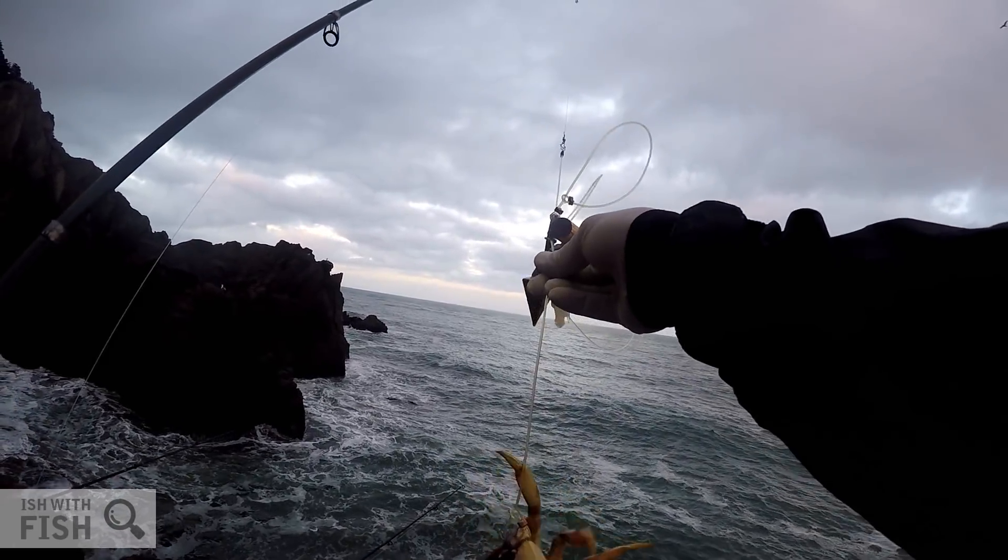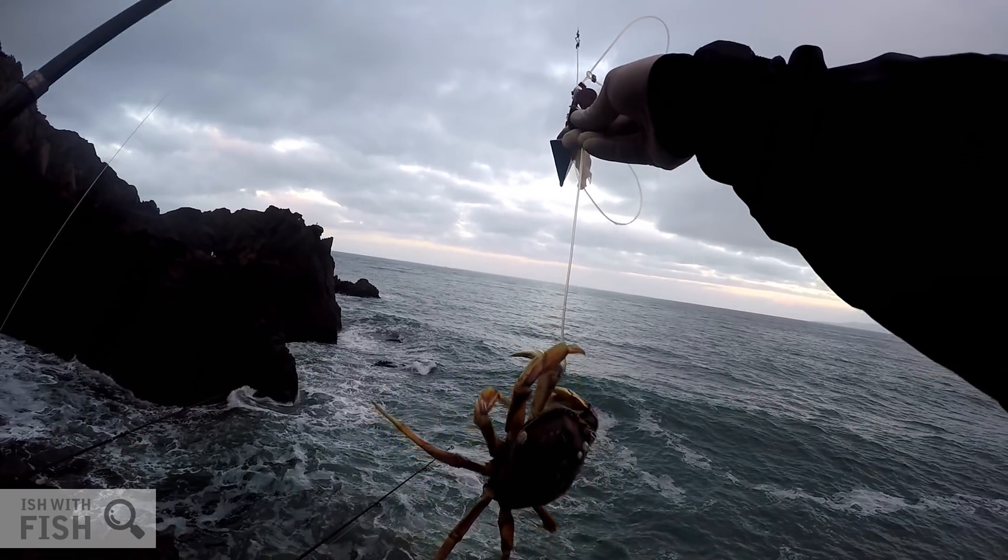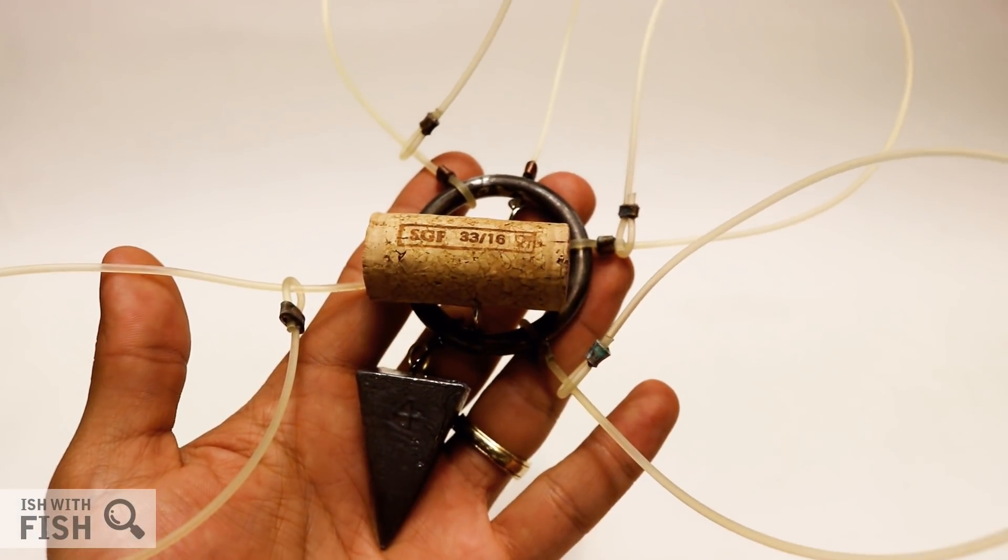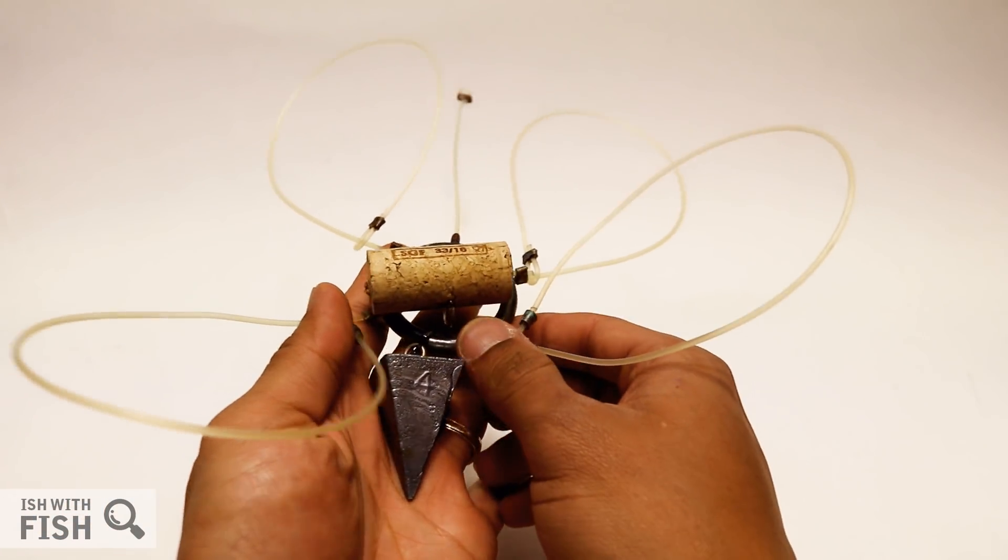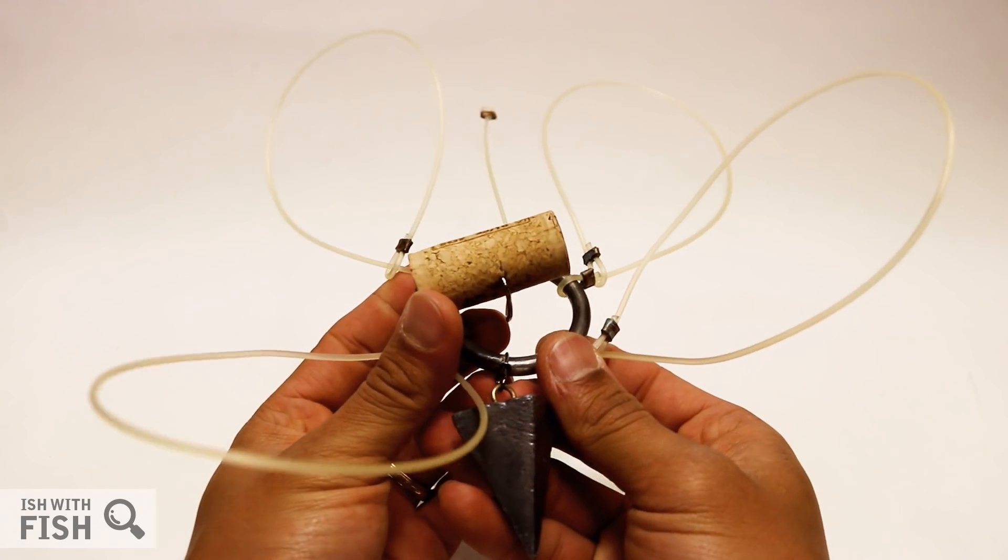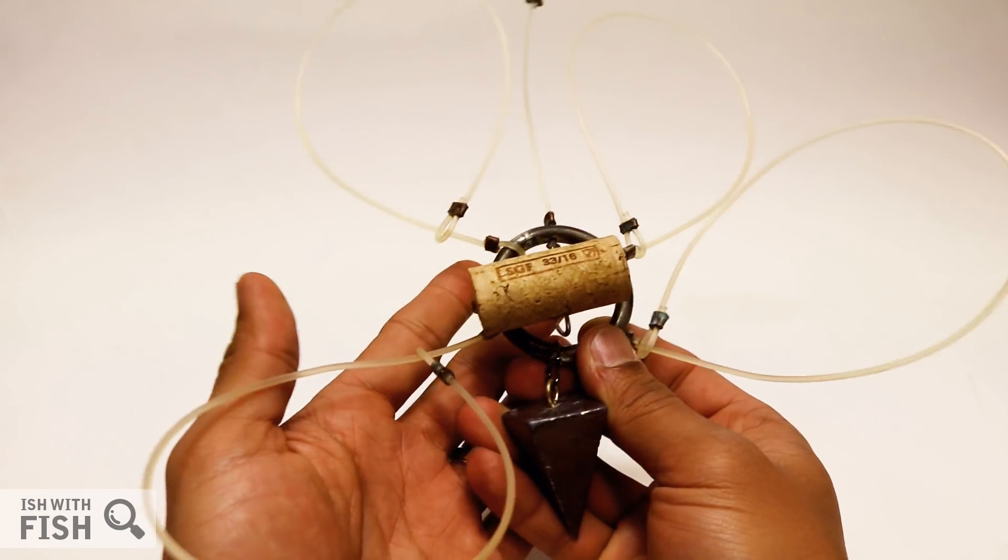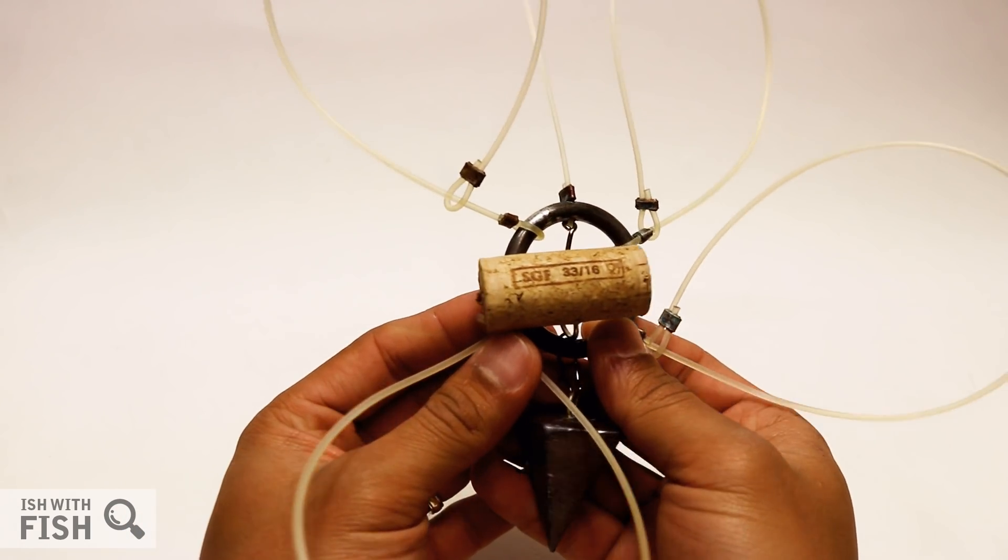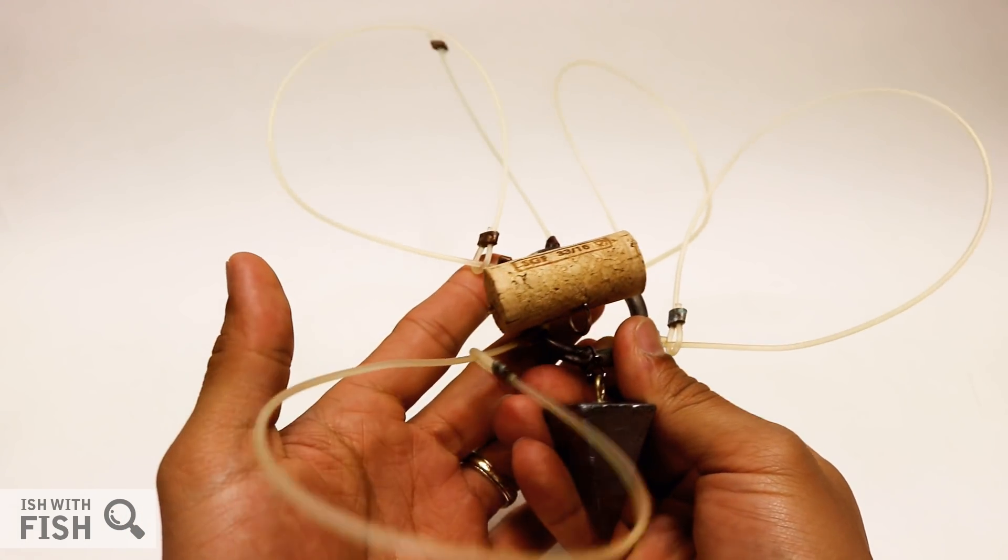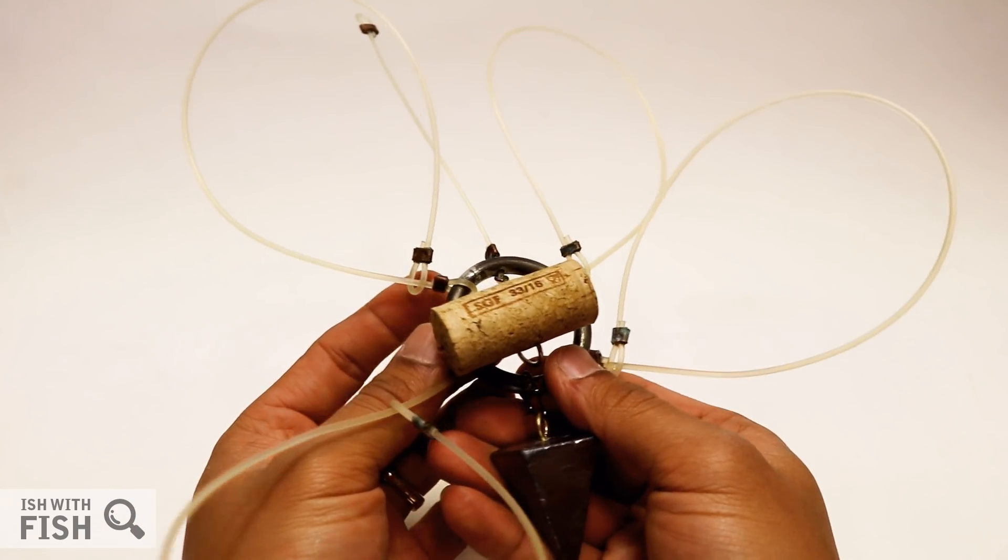The Oregon Crab Snare - a really simple design that actually catches crabs. One of the great things about this crab snare is that it's super small and super compact, and you can really stack multiple crab snares in your pack when traveling to remote areas.